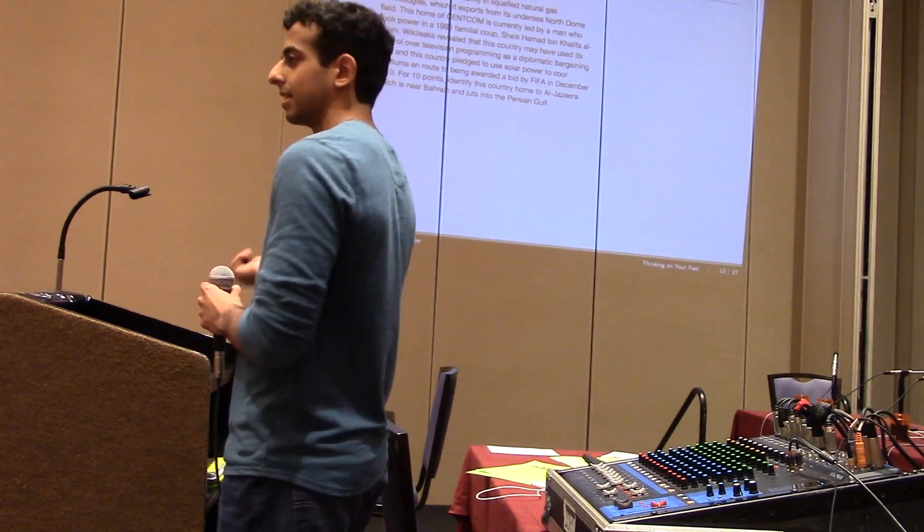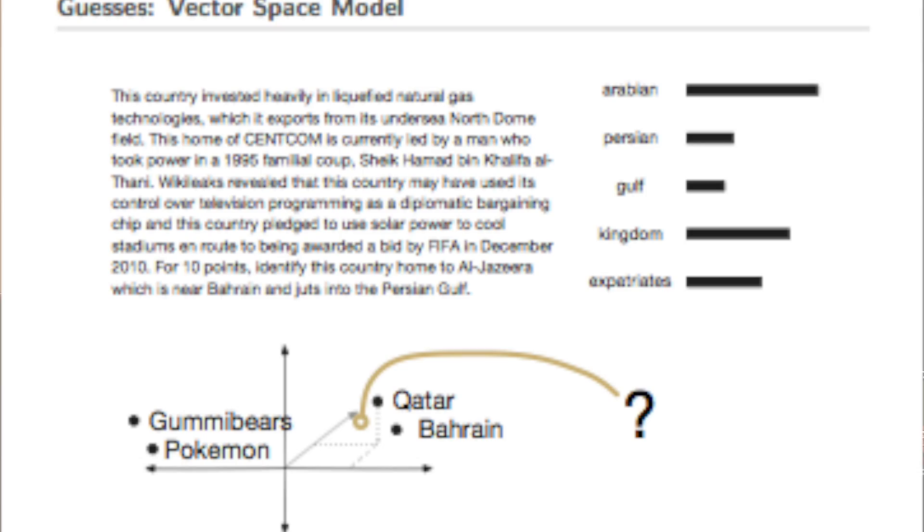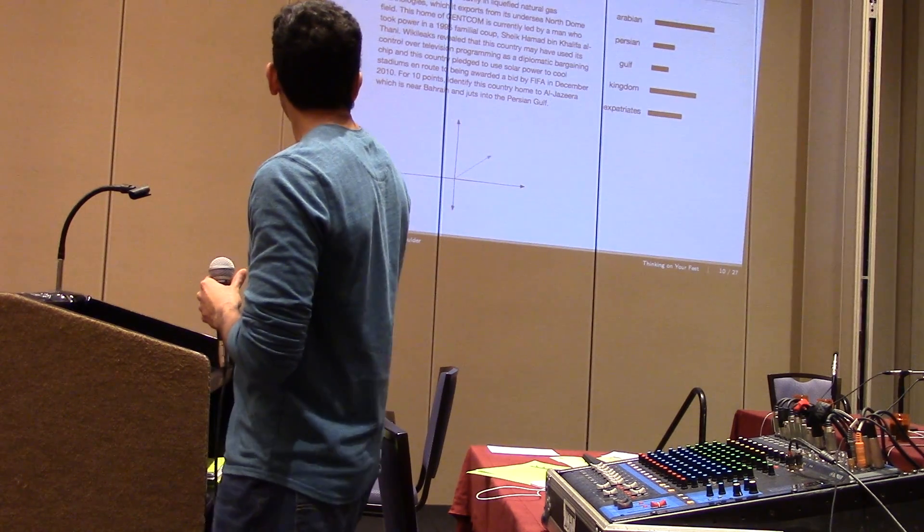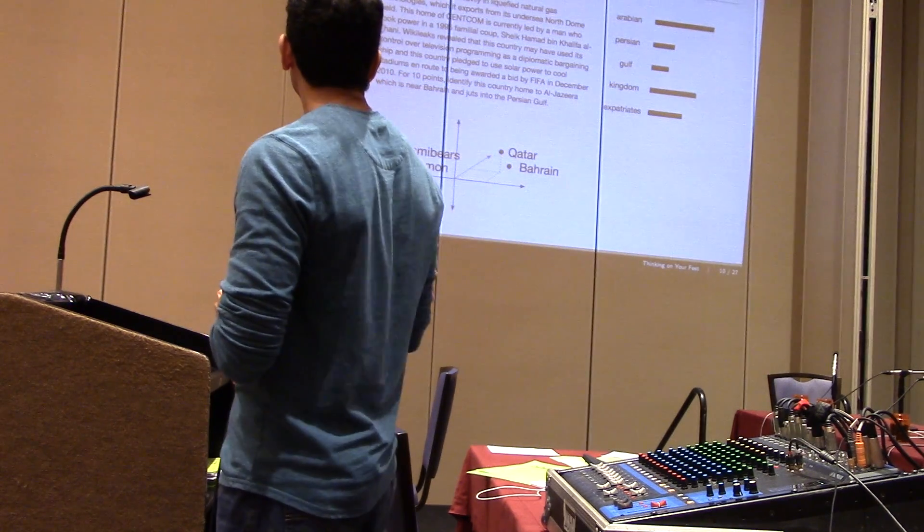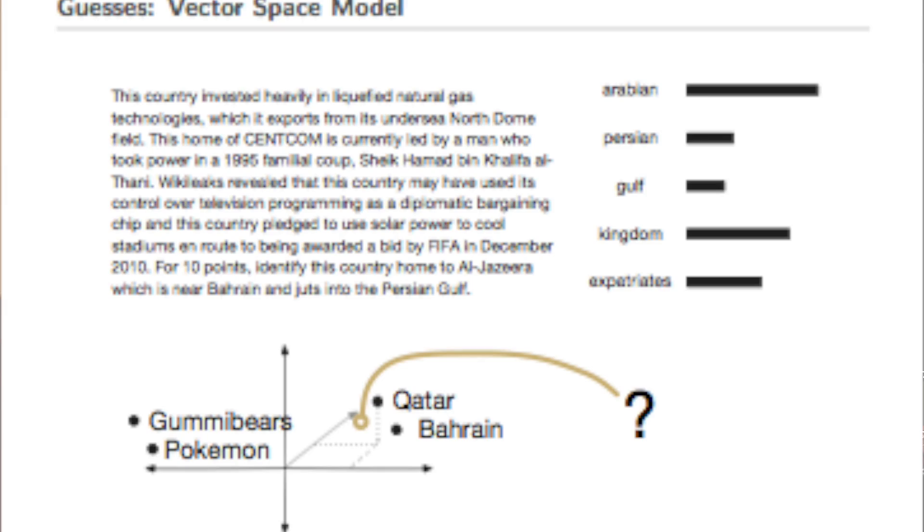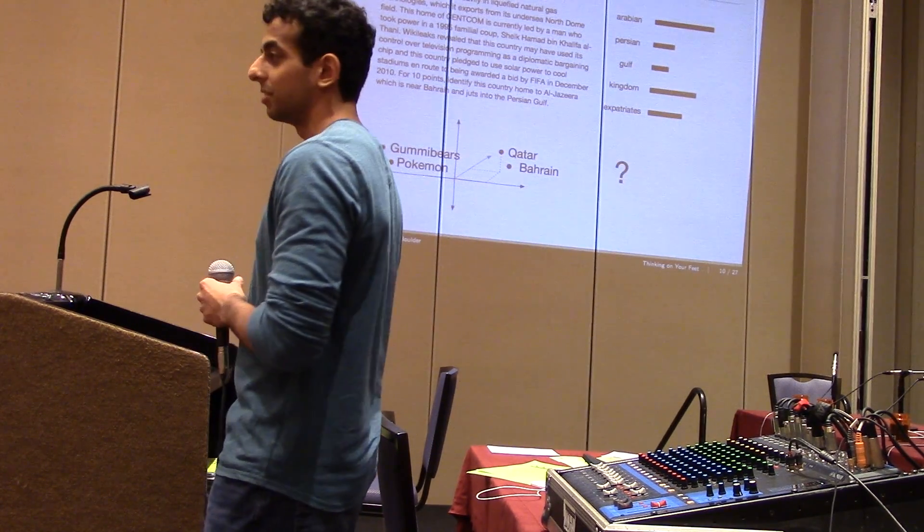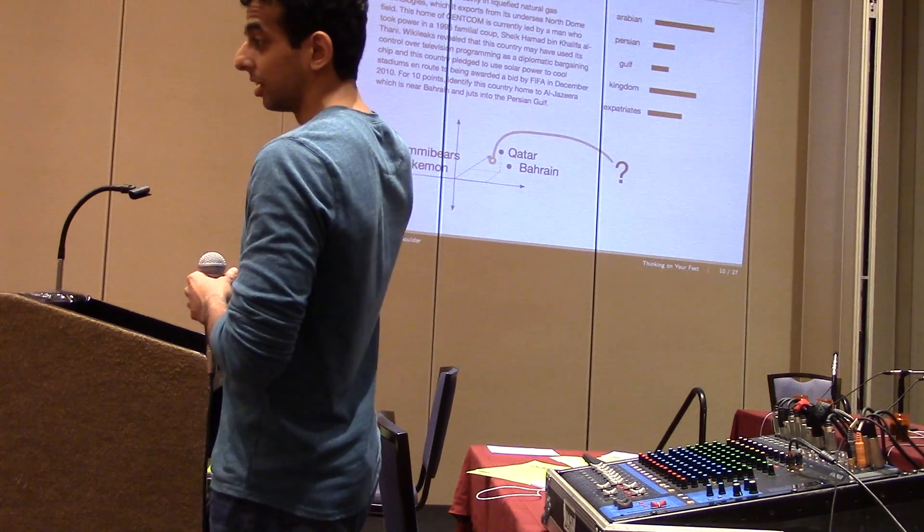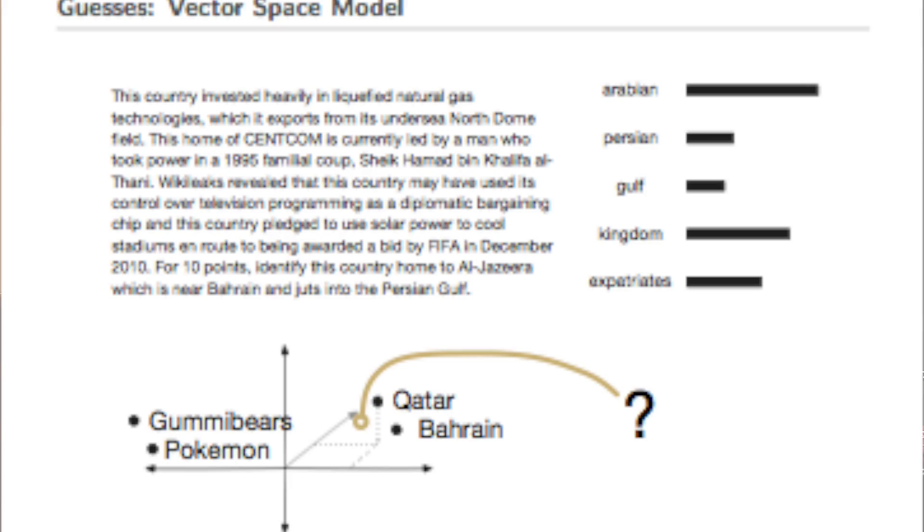So I guess the general idea behind the guess candidate generation phase is that we want to map both questions and answers into the same geometric space. And then we select the answer that's closest to the question. And so here, if you can see this, I guess you don't have to, this is a question about the country Qatar. And so our goal is to map this question into this three dimensional space as an example here. And so we have all our answers in the space as well. So Qatar and Bahrain are reasonable candidates for this question. Gummy bears and Pokemon are not reasonable.